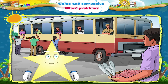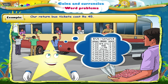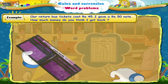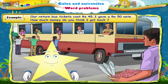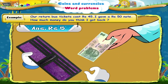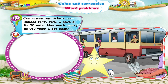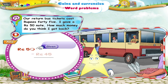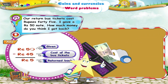Now, Starry, let me see if you have understood. Our return bus tickets cost rupees 45. I gave a 50 rupee note. How much money do you think I got back? Yes, Starry, 5 rupees. That is because from rupees 50, I subtract rupees 45, and I get rupees 5 returned.